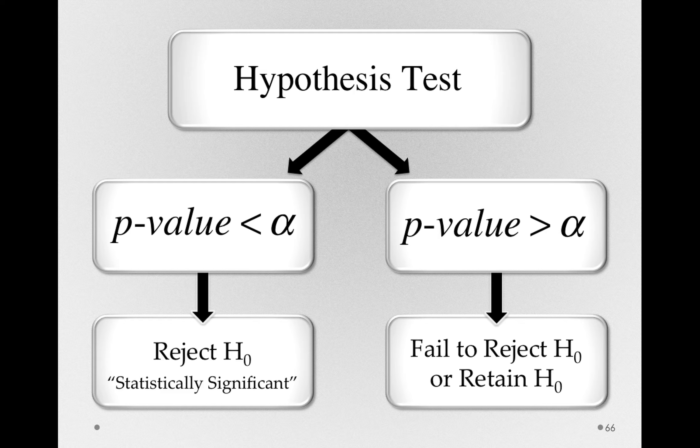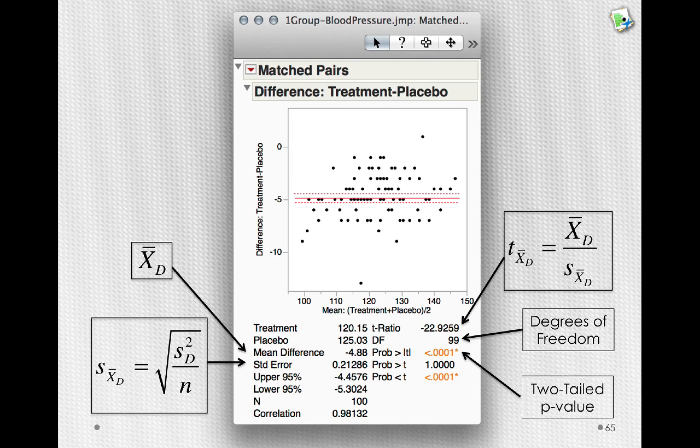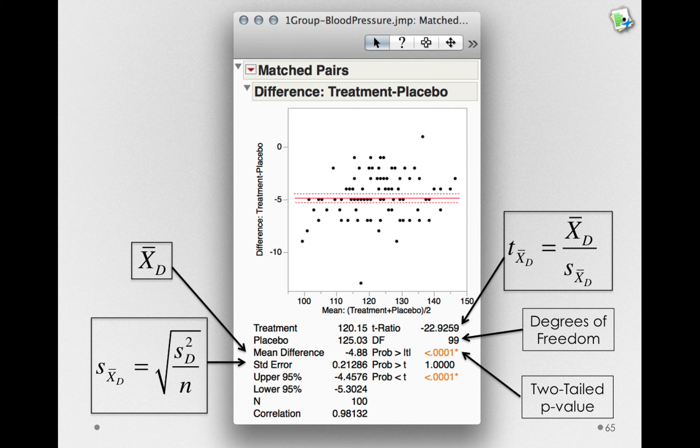If our p-value were to be greater than alpha, we would fail to reject the null, or we can say we retain the null. But let's go back and look at this particular graphic, because it shows us something pretty interesting.